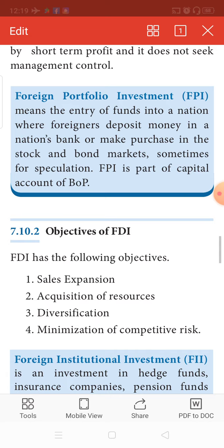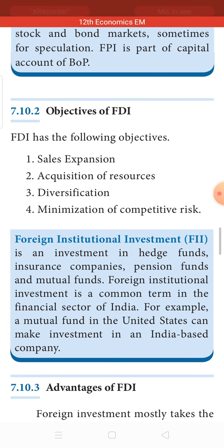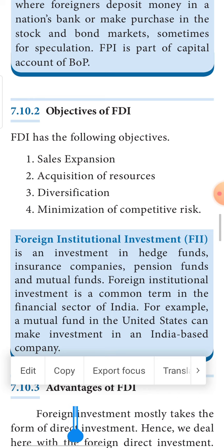Having learned what FDI is, we need to understand the objectives of FDI. The first objective is sales expansion — to promote and expand sales. When investment is made, production increases, and automatically sales will expand. The second is acquisition of resources — to acquire technological resources, capital resources, or any other manmade resources. For that we need huge funds, so we definitely need FDI.